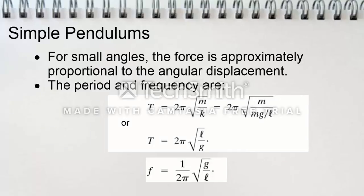For simple pendulums, for small angles, the force is approximately proportional to the angular displacement. The period and frequency formulas are a little different. For simple pendulums, the period can be found by multiplying 2π by the square root of the length over gravity. And the frequency can be found by multiplying 1 over 2π by the square root of gravity over the length.